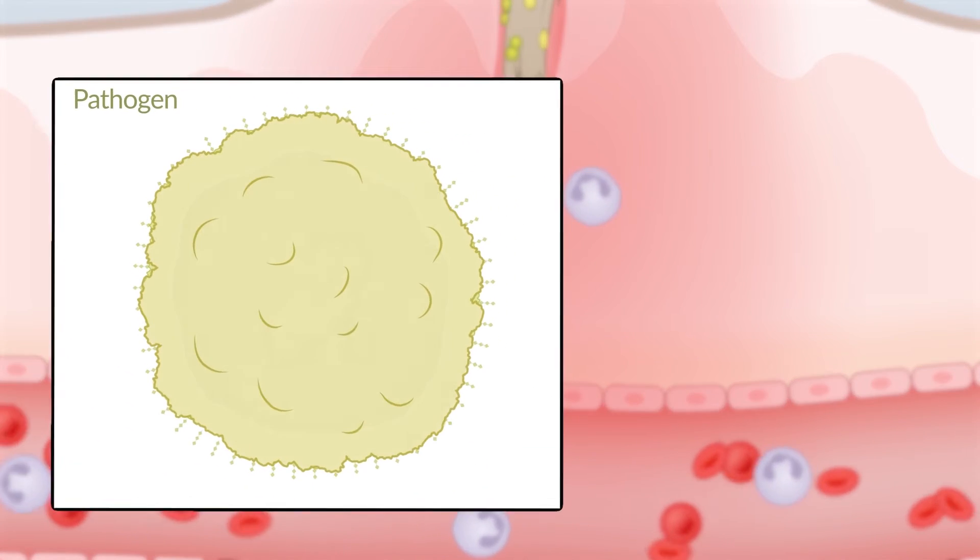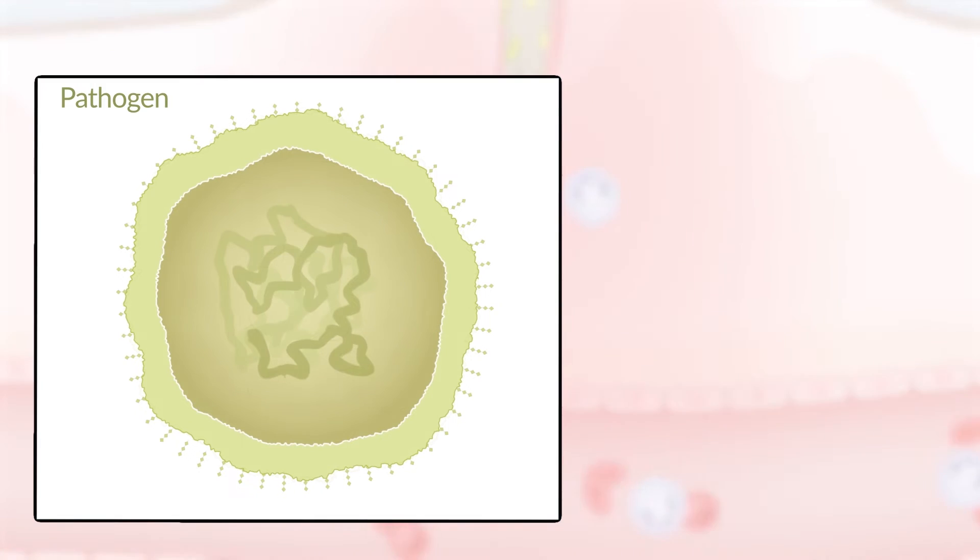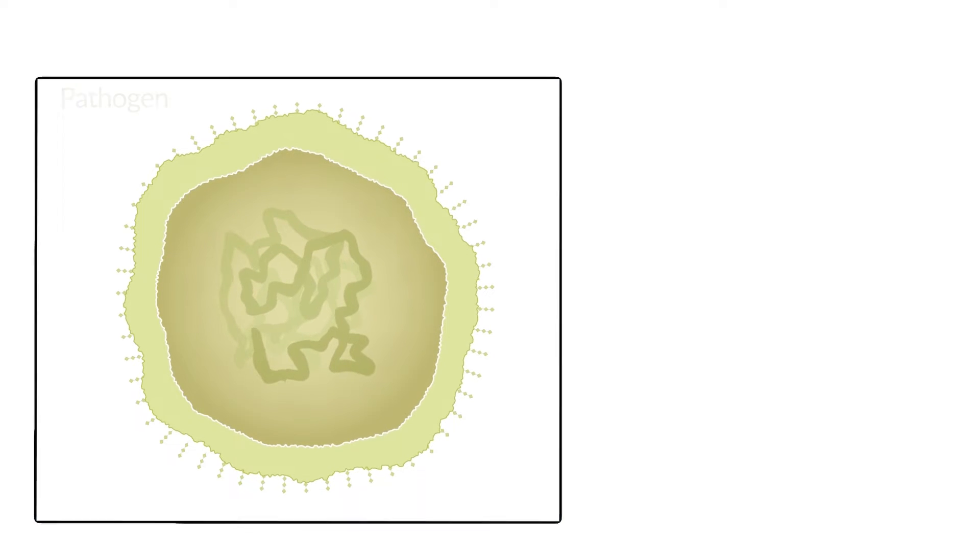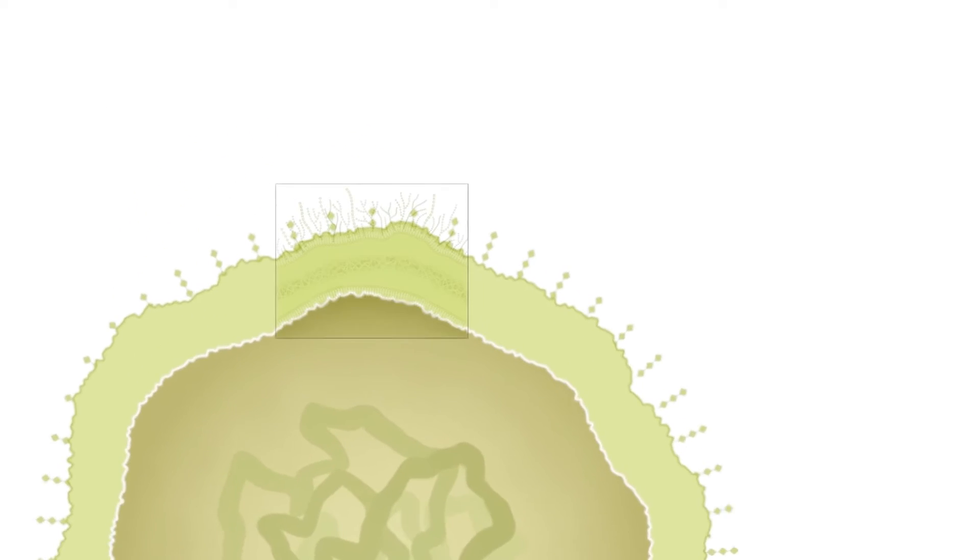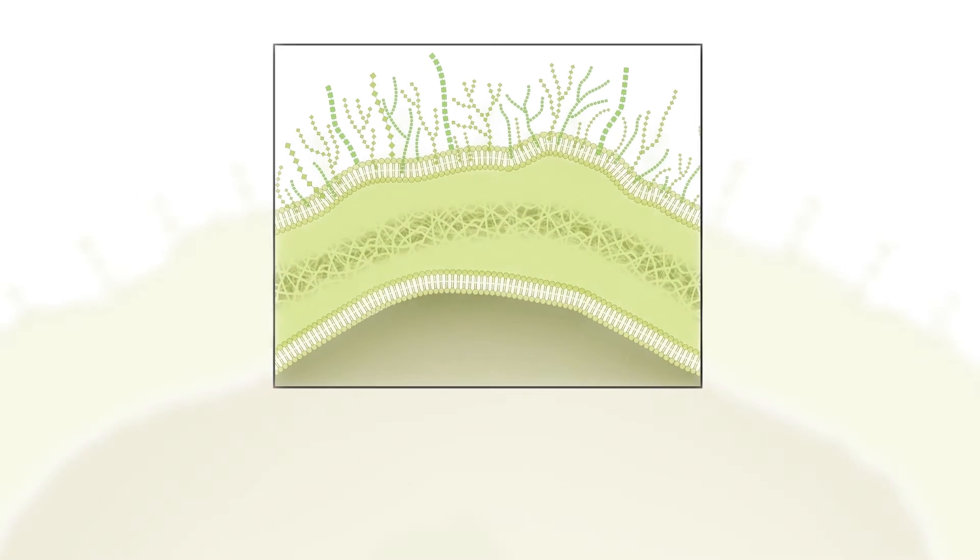The body recognizes certain specific repeating patterns present on many pathogens as foreign. These include, for example, lipopolysaccharides, which are located on the outer membrane of gram-negative bacteria.